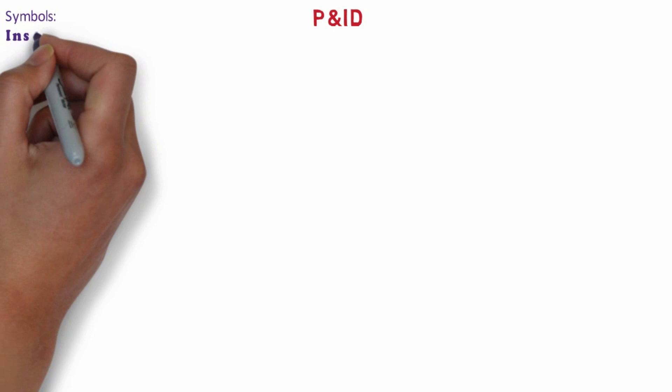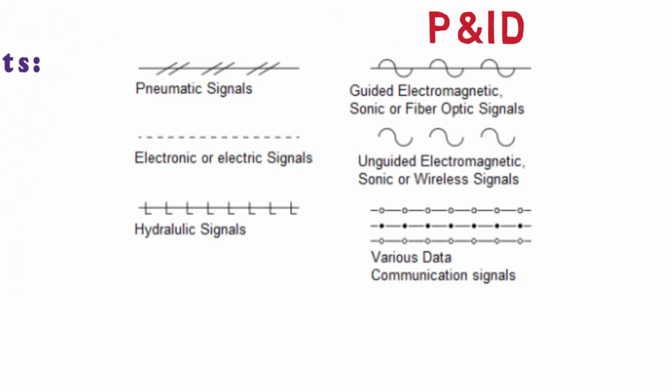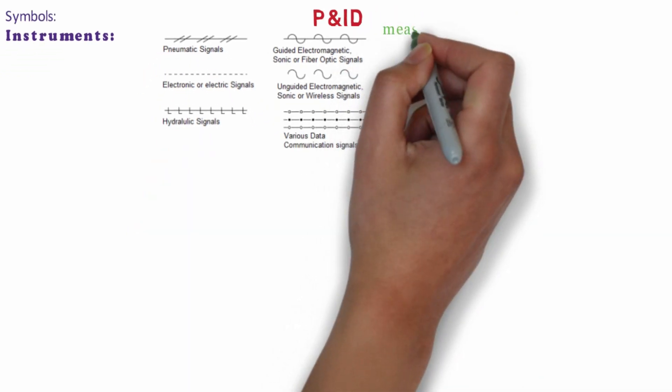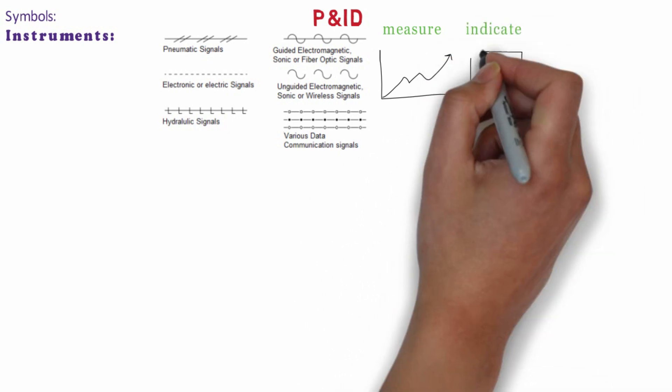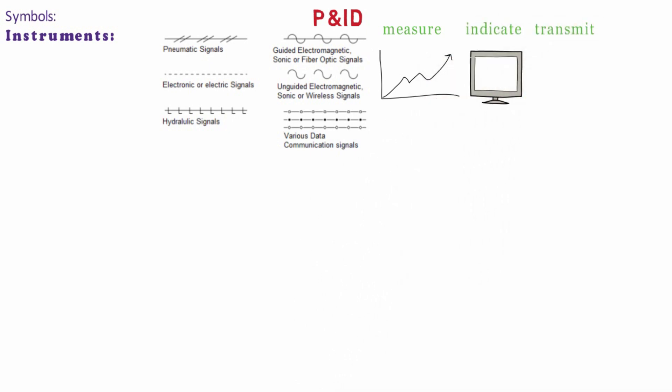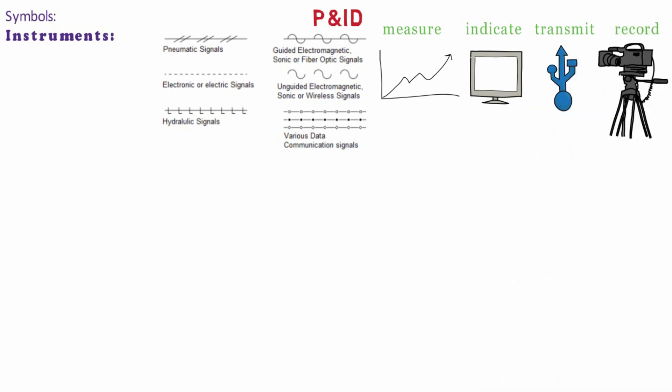Now let's talk about instruments. As we already discussed previously, various instrument signals are shown as follows. Instrumentation refers to devices that sense, measure, indicate, transmit, and or record physical properties within a system. For these type of components, there is a slightly different approach. The components are represented by what is called a bubble.